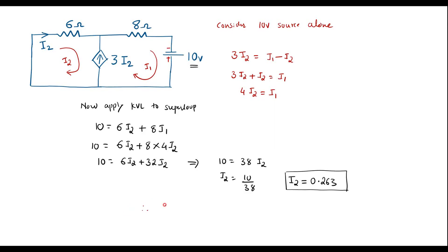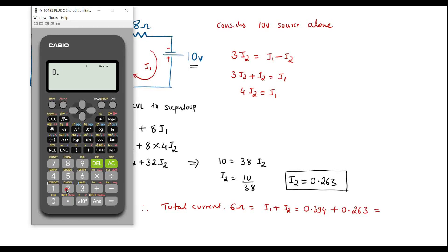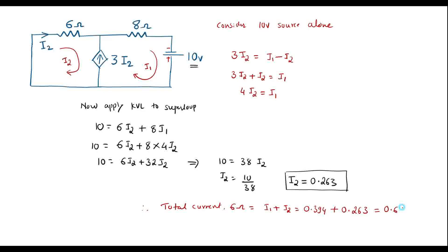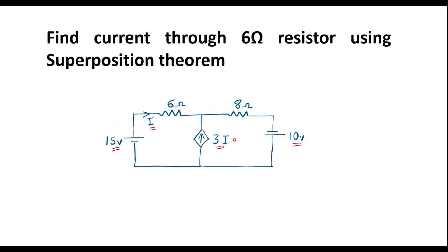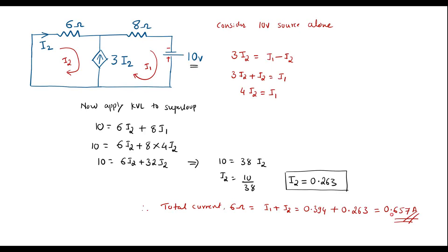Therefore, the total current through the 6 ohm resistor equals I1 plus I2, which is 0.394 plus 0.263, equal to 0.657 amps. This is the required result. Total current through the 6 ohm resistor is 0.657 amps.